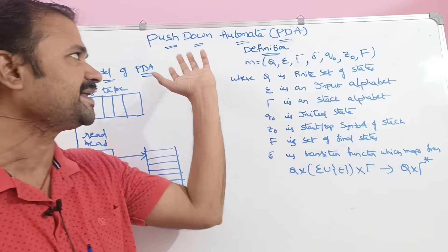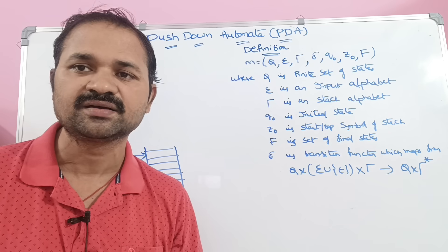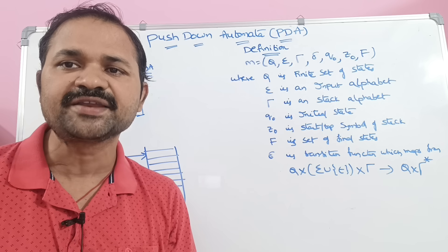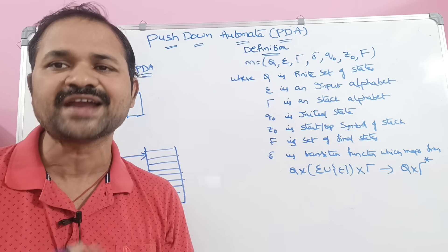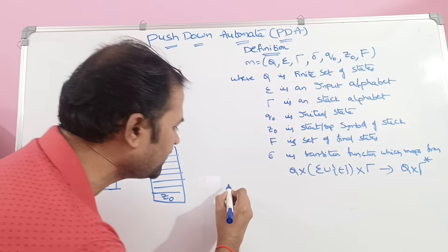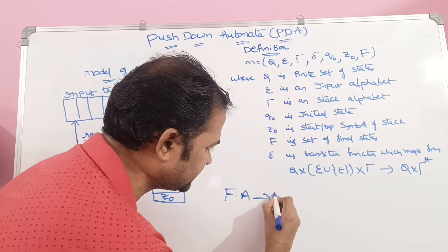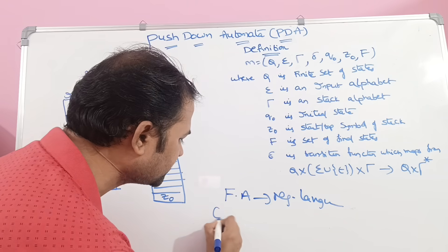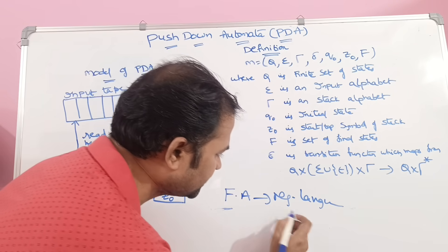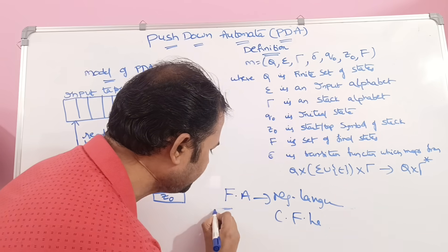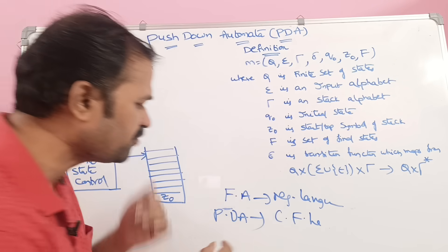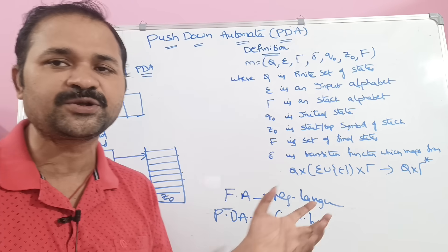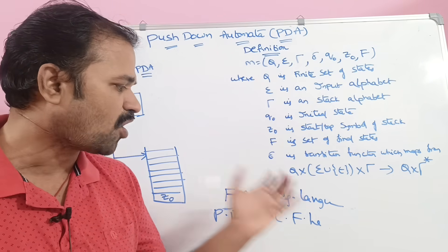Let us discuss what is pushdown automata, or PDA for short. PDA is mainly useful in order to overcome the drawbacks of finite automata. We know that finite automata recognizes regular languages. Likewise, in order to recognize context-free languages, we use pushdown automata. Pushdown automata is a machine just like finite automata, and it is mainly useful in order to accept or recognize context-free languages.